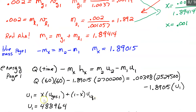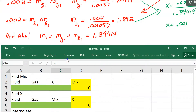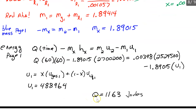Using the quality equation — or the spreadsheet which lets you input fluid and gas properties along with x to calculate the mixture — you can find U1 fairly easily. Now take all of these numbers and plug into the energy equation and solve for Q. The final answer: the maximum heat you can put in without drying it up is 1,163 joules.